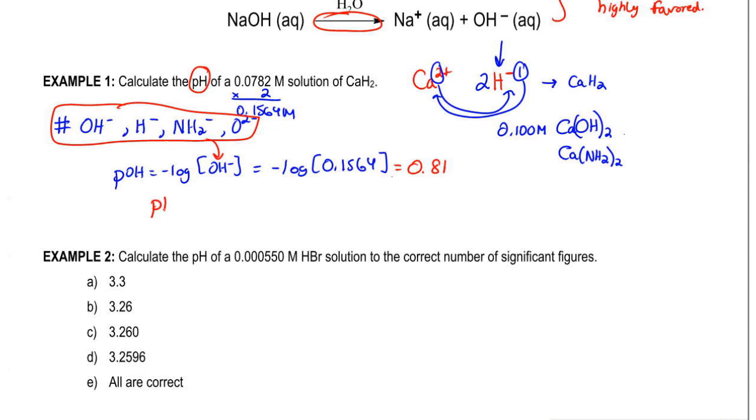We need to use the next equation, pH plus POH equals 14. Plug in what we know for POH, 0.81. We need pH, so subtract 0.81 from both sides. So pH here equals 13.19. That'll be our pH for this first question.